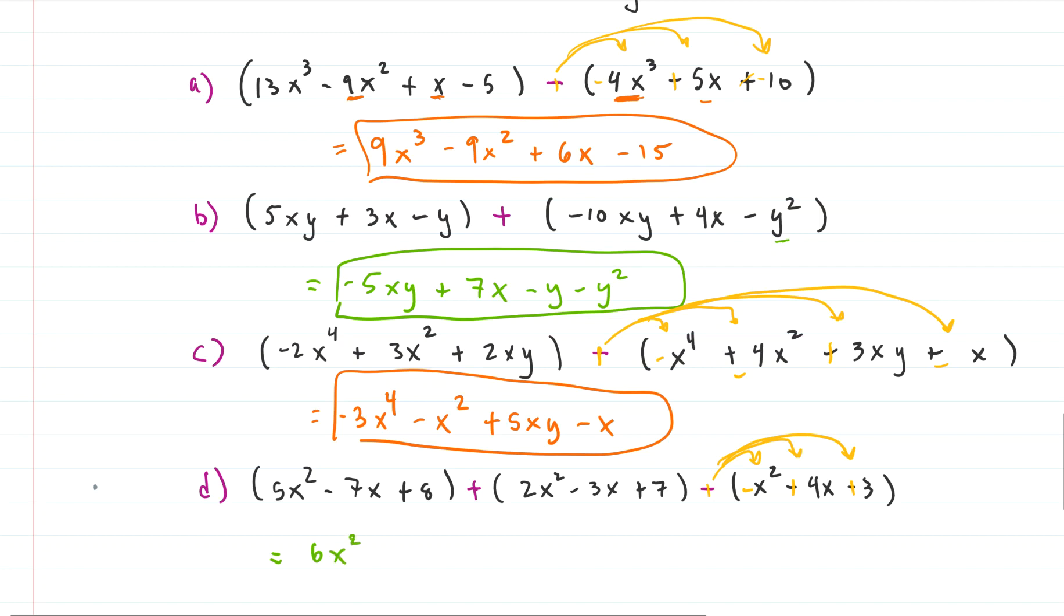And then the constant terms. We have 8 and 7, which is 15. And 3, which is 18. And we are done. That's it. Hopefully this was helpful.